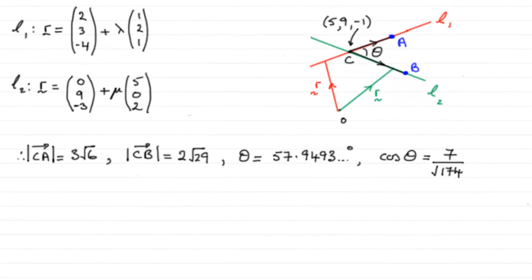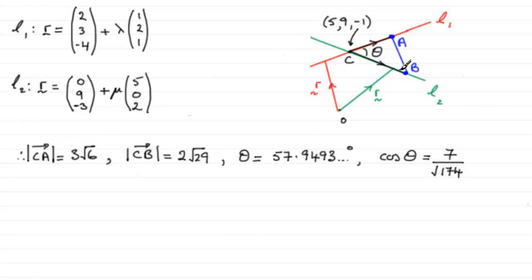Now for this last part it says, hence or otherwise, find the area of triangle ABC. I'll just draw a line across from A to B. Now because it said hence, it's got to obviously have something to do with the previous part. And in the previous part we found out that the length of CA was 3 root 6, and CB was 2 root 29, and the angle ACB was 57.9493 odd degrees.